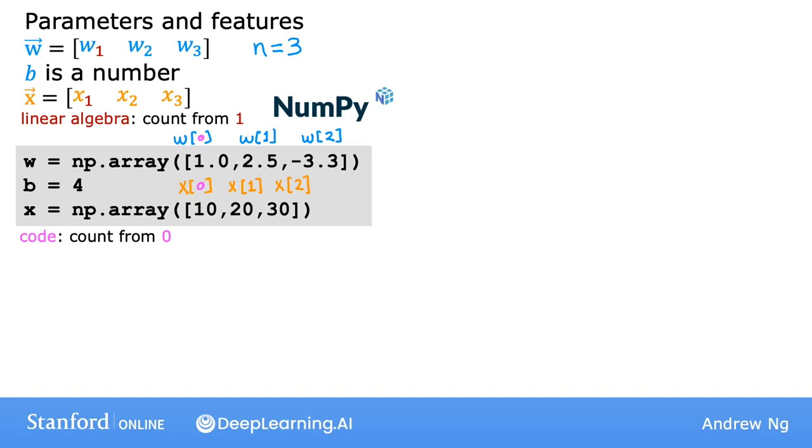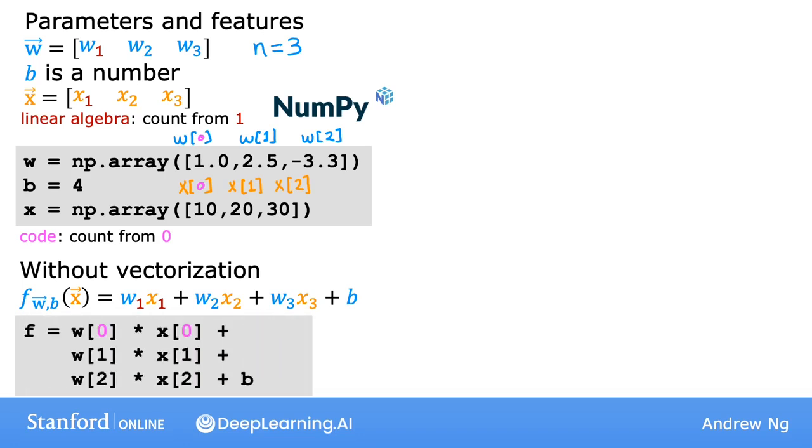Now let's look at an implementation without vectorization for computing the model's prediction. In code it would look like this: you take each parameter w and multiply it by its associated feature.